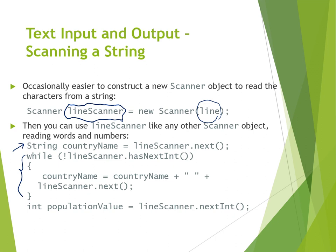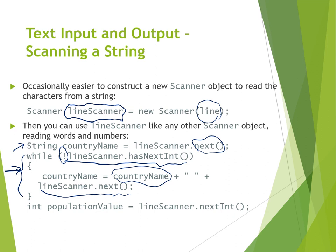In a while loop we check whether the country name has more parts with spaces. For example, "United States" has a space, so if you only call `next()` it only reads "United". This while loop handles additional parts of the country name like "States". We say: as long as `lineScanner.hasNextInt()` returns false (there is no number yet), concatenate the country name with the next string that `lineScanner.next()` returns.